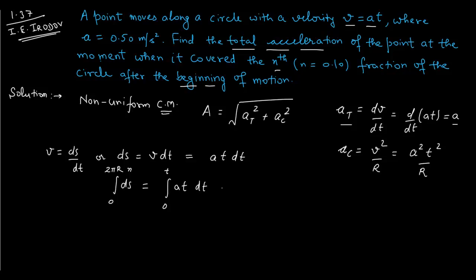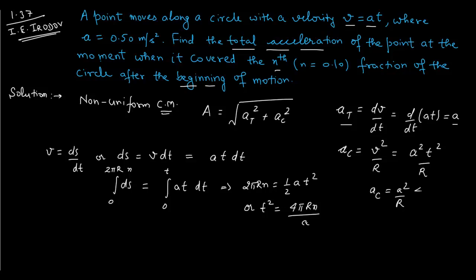Solving the integral gives 2πrn equals one-half a t squared, so t squared equals 4πrn divided by a. Substituting this value of t squared into the centripetal acceleration formula — a squared over r times 4πrn over a — the centripetal acceleration simplifies to 4πna.